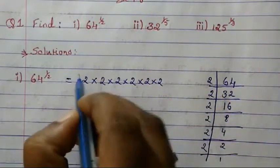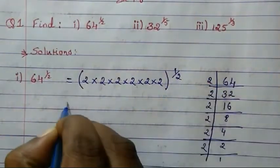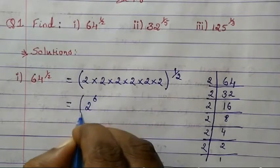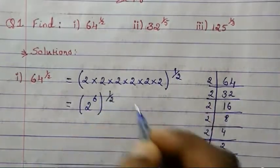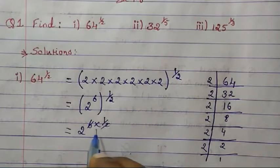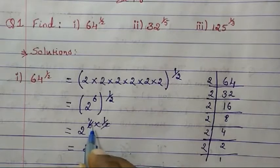64 can be written as 2 × 2 × 2 × 2 × 2 × 2 (six times), raised to the power 1/2. So 2 is 6 times, and then the power we write down as it is. Since it is multiplication, we can simplify this.